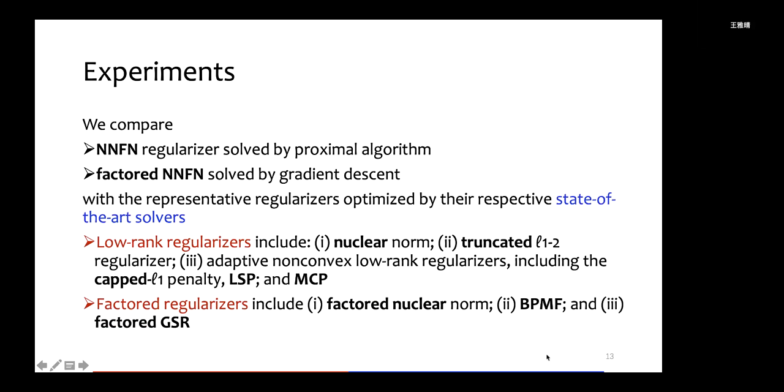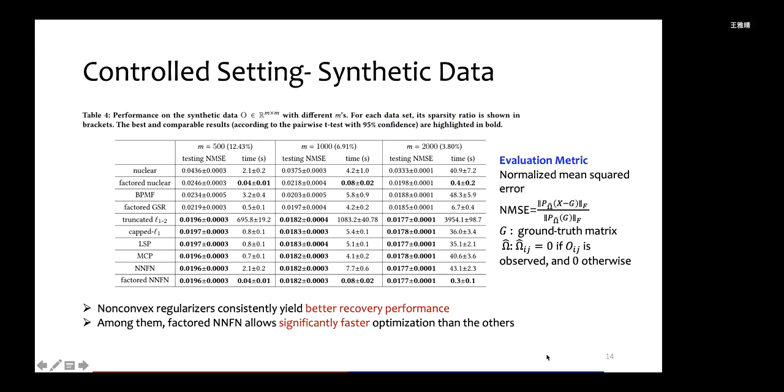In experiments, we compare NNFN and factored NNFN with the representative regularizers listed in the previous tables. We compare them with low rank regularizers including the non-convex regularizers, convex regularizers, and also their factored forms. We first consider controlled settings on synthetic data, where both the ground truth data and the noise are known. We evaluate the recovery performance by normalized mean squared error.